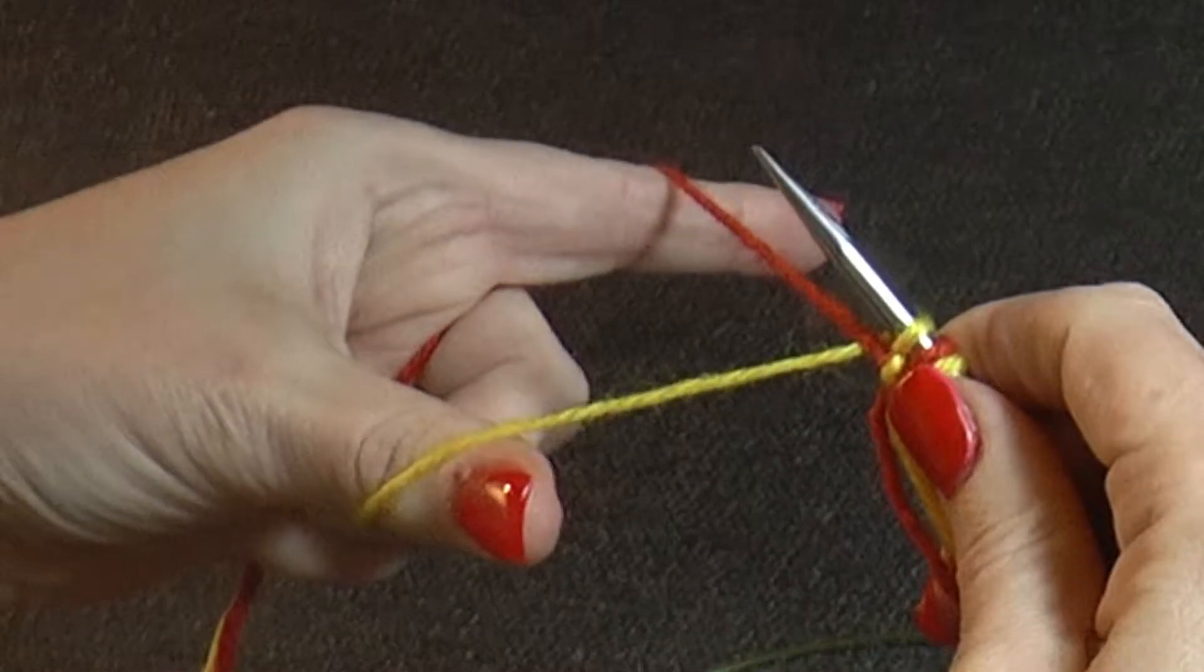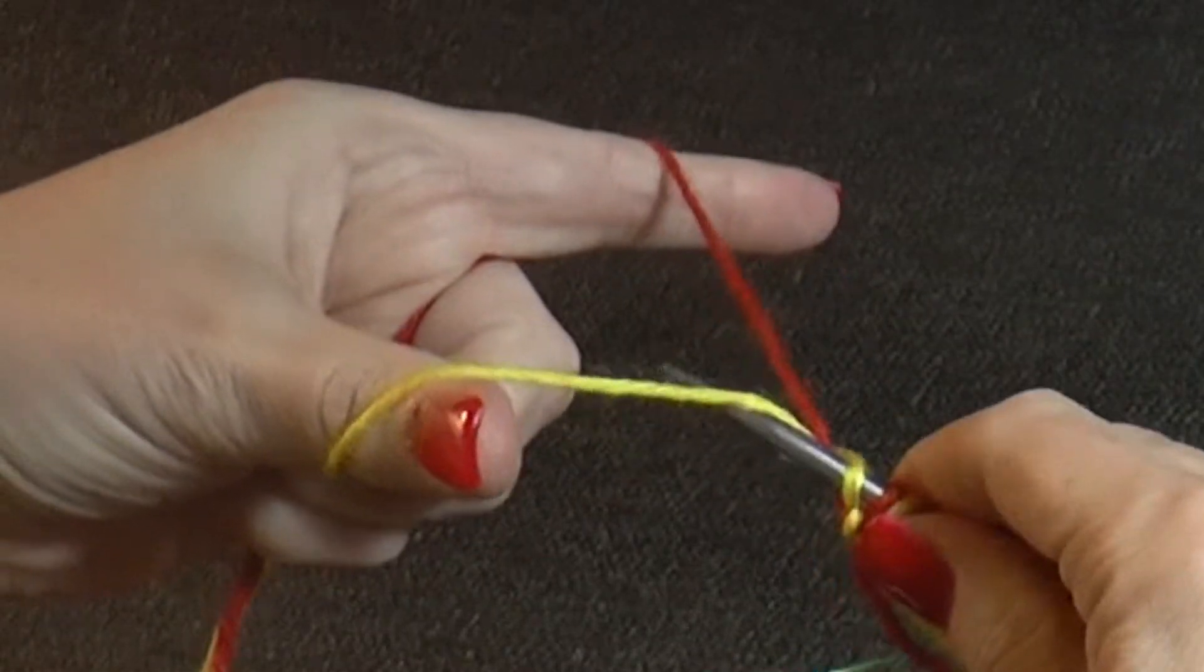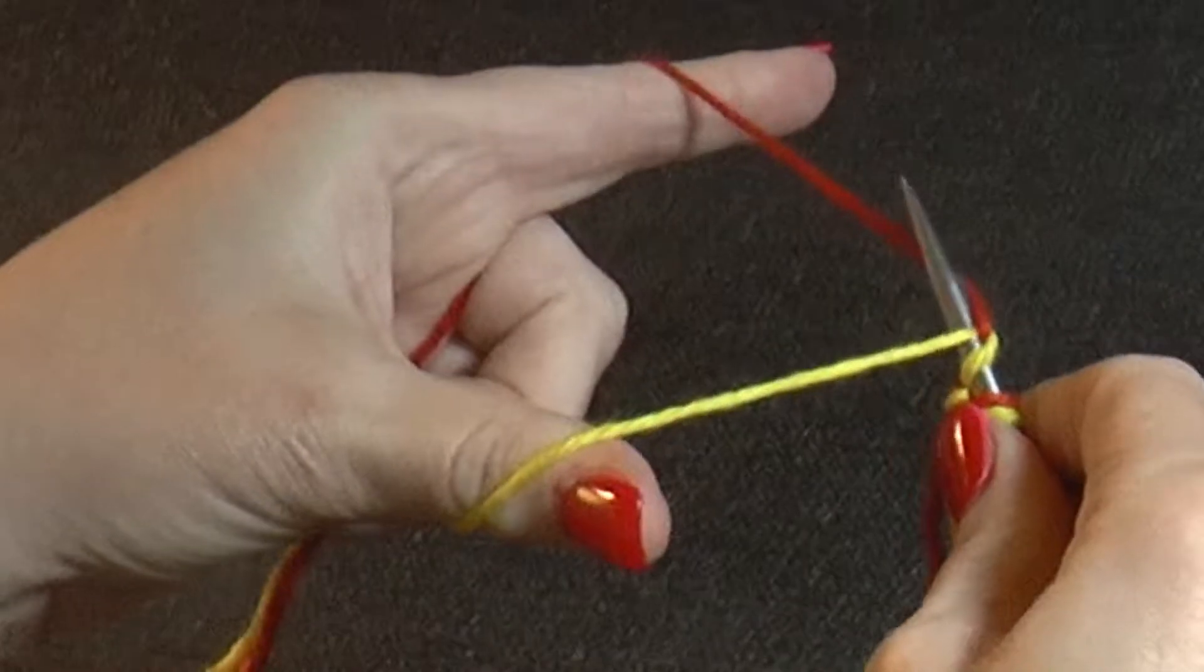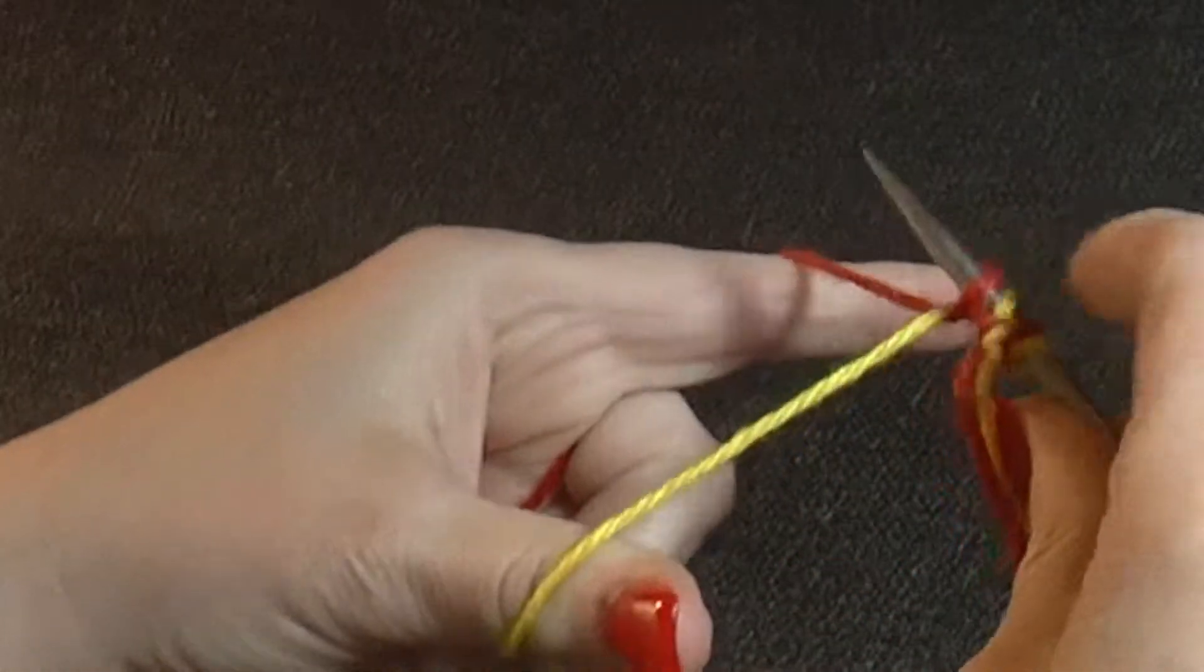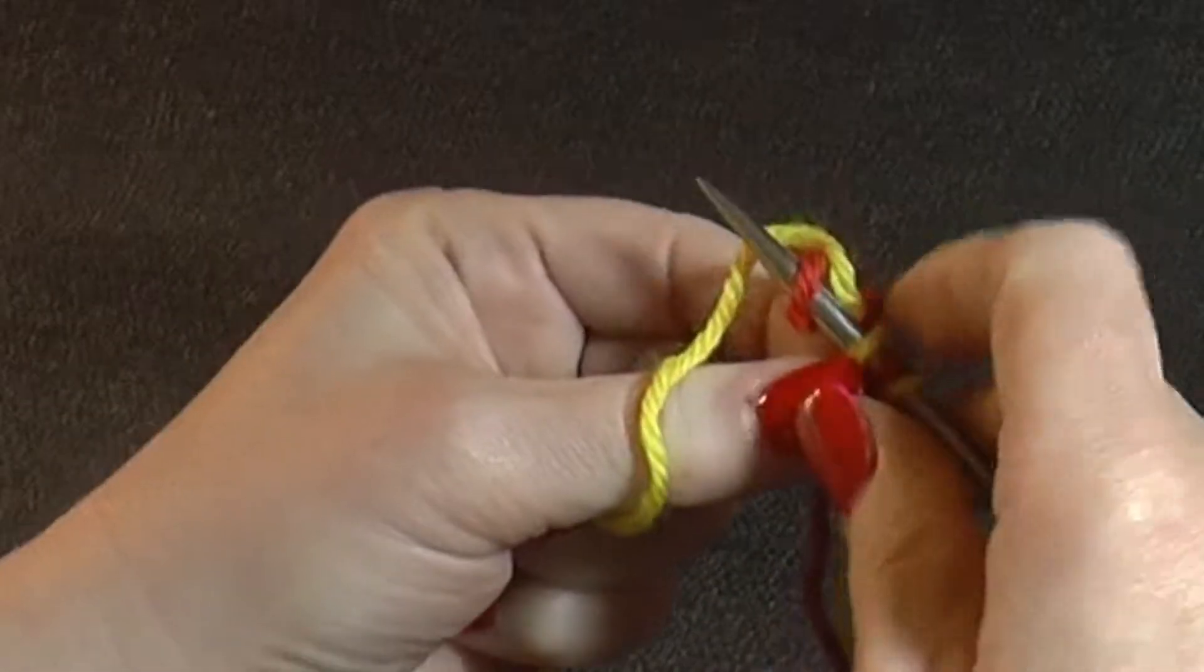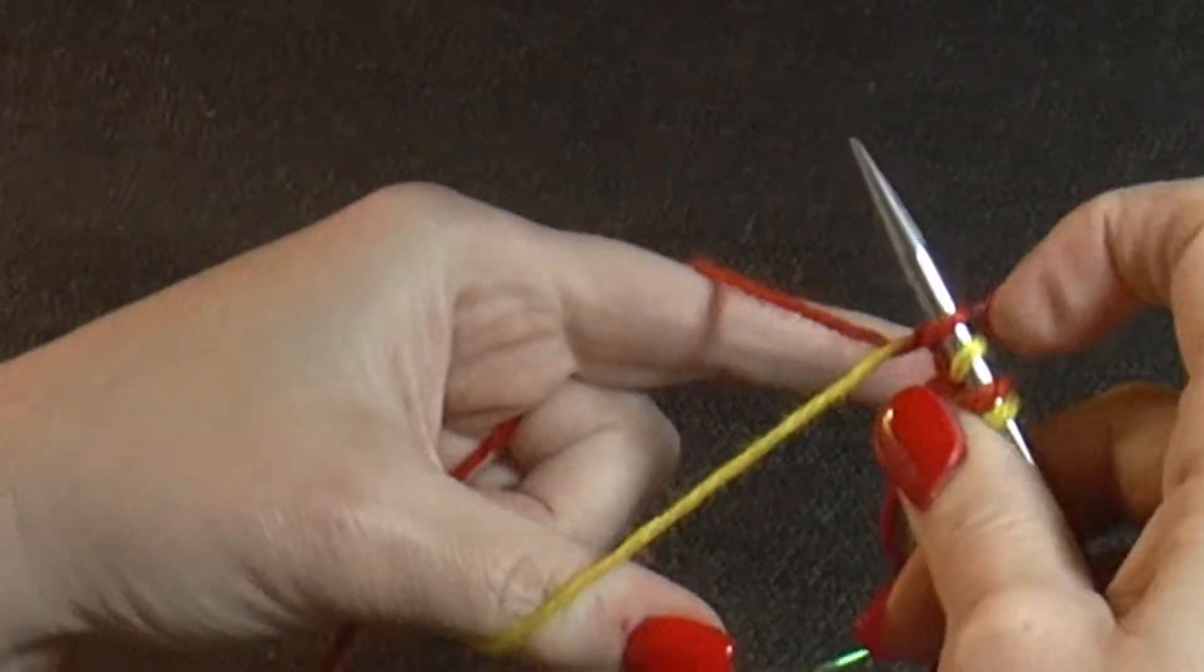Second, around your thumb, over the index finger, you've got your second stitch. See, now you've got two stitches on.